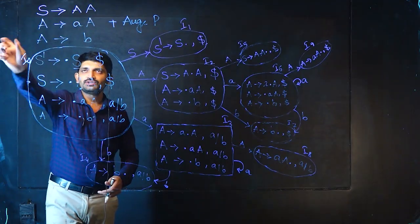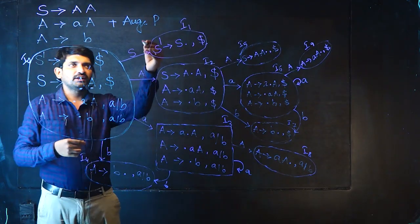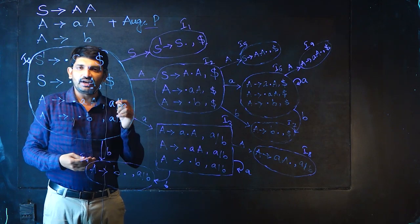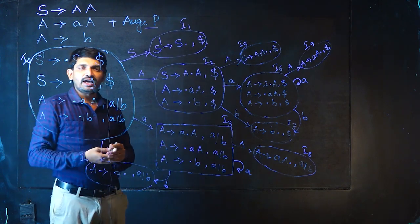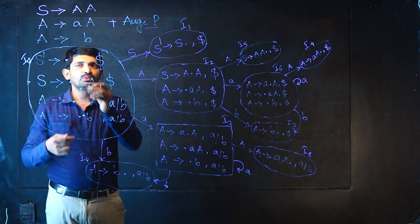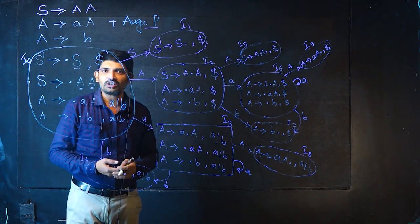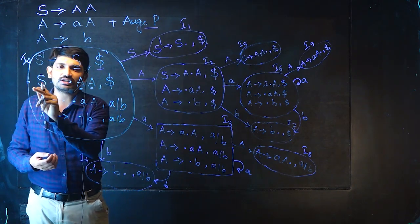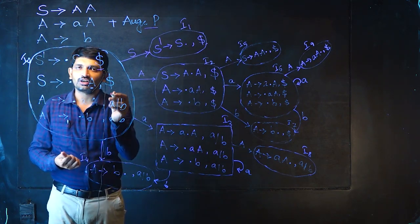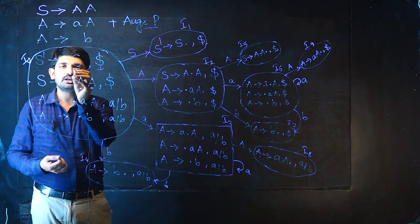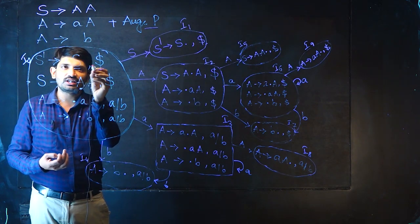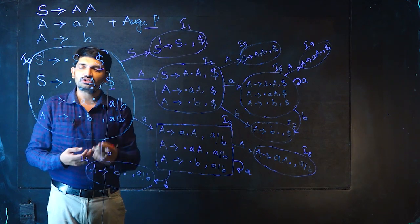For the given grammar, I attach the augmented production S' → · S with dollar as the lookahead per rule 1. Because of the dot, I apply closure and write all S productions. S → · A with dollar as lookahead — after S nothing is there, so per rule 3, I copy the same lookahead. Then because of the dot before A, I write all A productions. I find FIRST(A) and attach those symbols as lookaheads for the A productions.